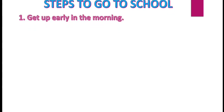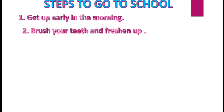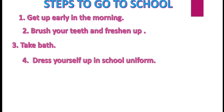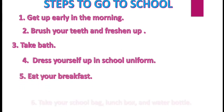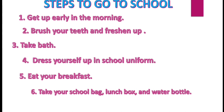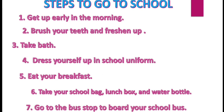You all are going to school. But do you know the steps to follow to go to school? First step is: get up early in the morning. Then brush your teeth and freshen up. Then take a bath. Dress yourself up in school uniform. Eat your breakfast. Take your school bag, lunch box and water bottle. And go to the bus stop to board your school bus. So children, this is the steps to go from home to school. This fixed set of steps you follow every day — this is what we can call an algorithm.